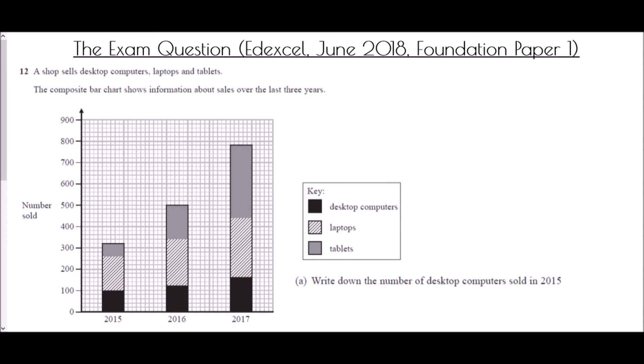So it asks us to write down the number of desktop computers sold in 2015. So we're only dealing with the first bar and we're looking for the number of desktop computers so those are the ones in black and so for that all I need to do is go to the top of the bar and read how many that is. So the number of desktop computers well that was 100.